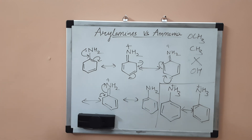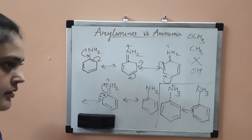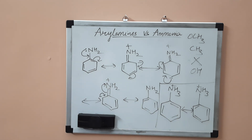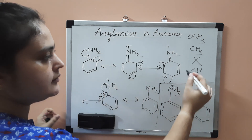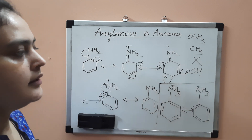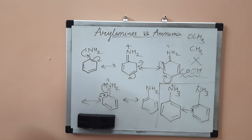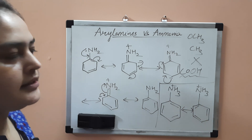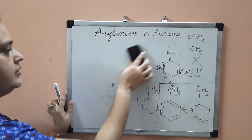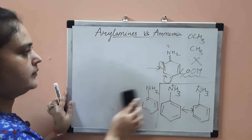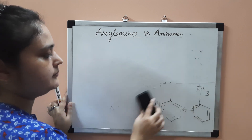In this way, we can discuss the structure-basicity relationship of arylamines. One correction: the electron withdrawing group mentioned is not OH but carboxylic acid, which will decrease the basicity of arylamines. Now we will see one example of how to solve a problem based on the knowledge we have gained.